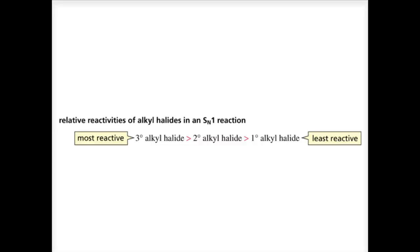As we continue our discussion of SN1 reactions, let's look at the relative reactivities of alkyl halides. We know that a tertiary carbocation is more stable than a secondary carbocation, which is more stable and easier to form than a primary carbocation. So tertiary alkyl halides are more reactive than secondary alkyl halides, which are more reactive than primary alkyl halides in an SN1 reaction.